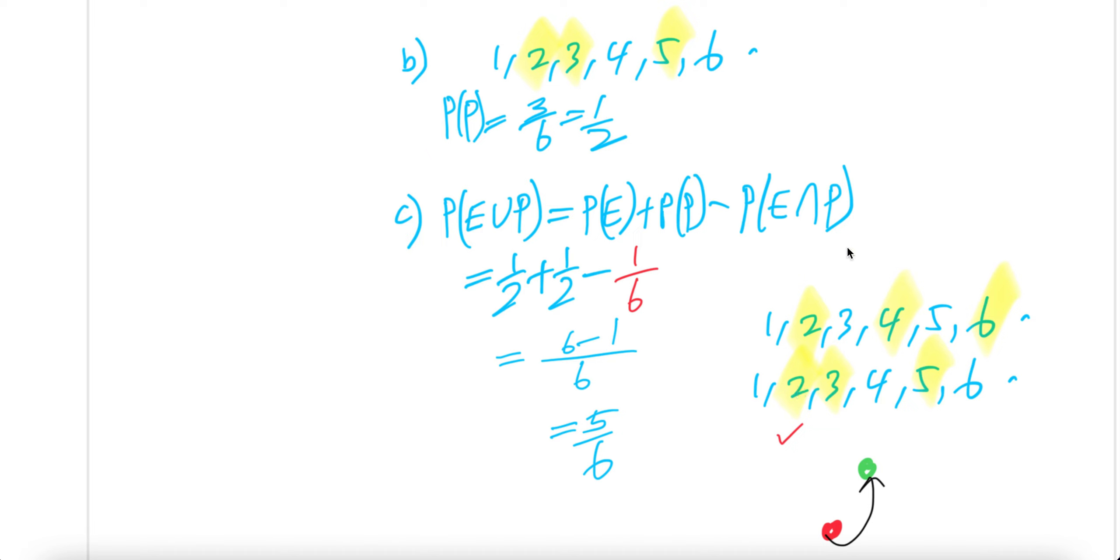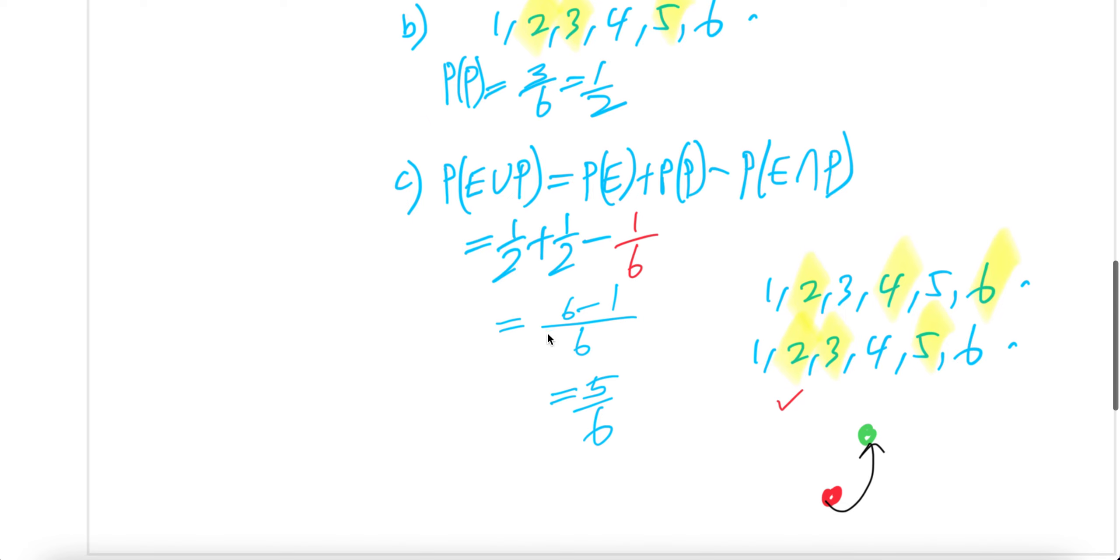So it'll be one number which is even and prime, i.e., two. So one out of six possible answers. So here you get six. There are two halves, which is one. So six minus one, five over six.